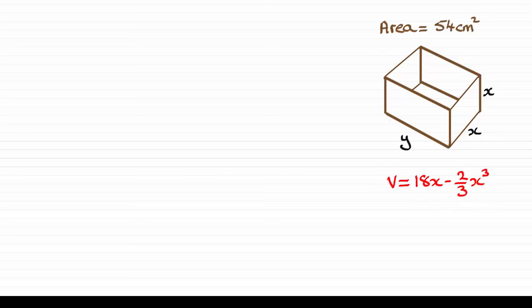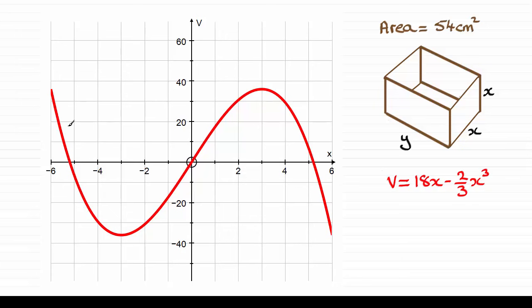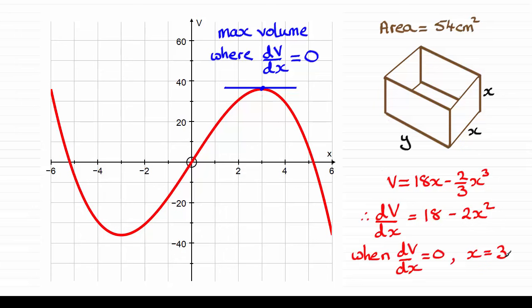Now if we were to draw a graph of that equation, it would look something like this. We'd be only interested in positive values of x because it represents a length. And if we're looking for the maximum volume, it'd be at this point around here. And we can find that very easily by setting dv by dx equal to 0. The gradient here of the tangent would be 0. So if you were to differentiate v with respect to x by following the rules that I've shown you, it turns out to be 18 minus 2x squared. And if we set this equal to 0, we find that x equals 3. So the maximum volume occurs when x is 3 and it turns out to be 36 cm cubed.